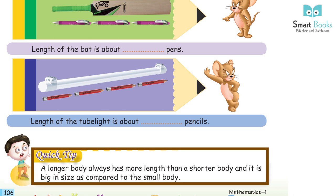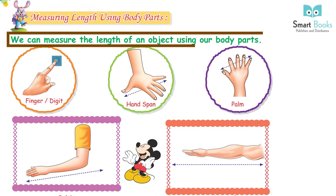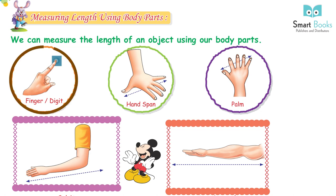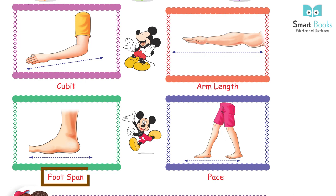Quick tip: A longer body always has more length than a shorter body, and it is bigger in size compared to the smaller body. Measuring length using body parts: We can measure the length of an object using body parts.